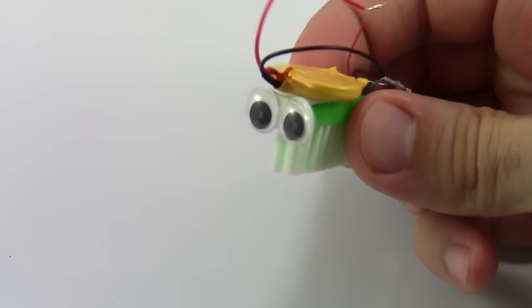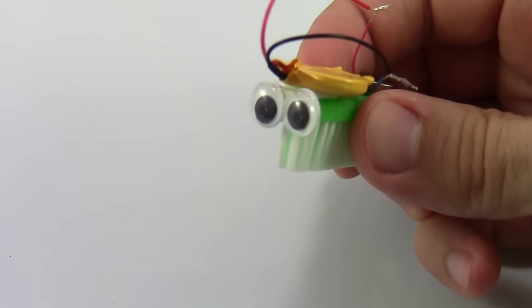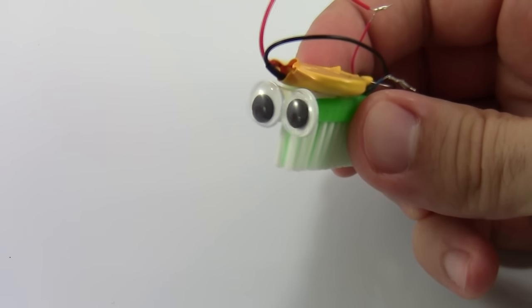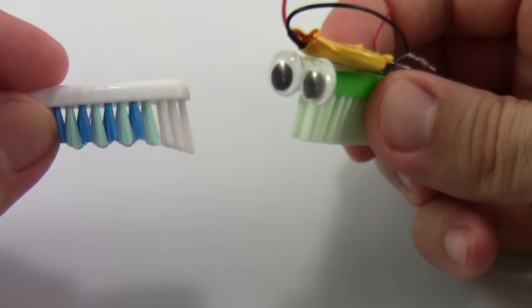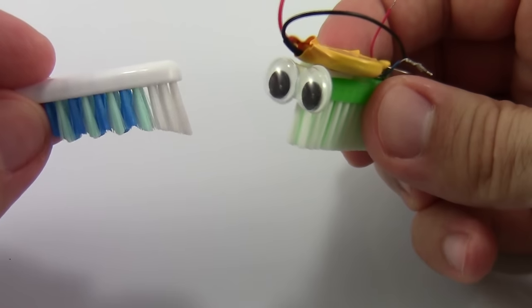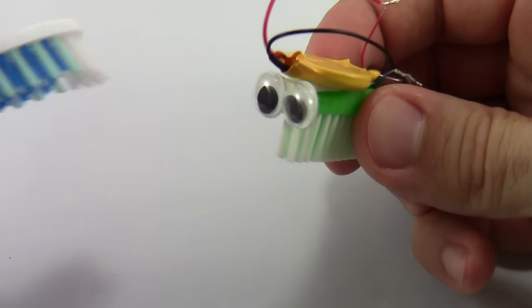You can decorate your Bristlebot, for example, by adding googly eyes. You can also build two Bristlebots, since your kit comes with two batteries and two motors. For example, you could build a second one using a different type of toothbrush like this one with slanted bristles, and then race them together to see which one is faster.